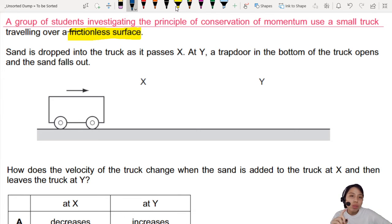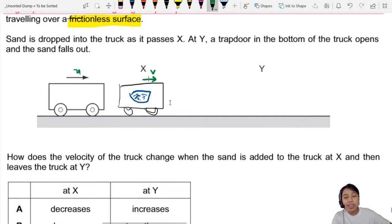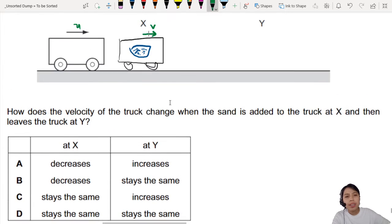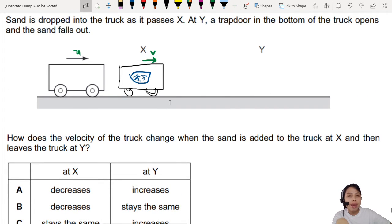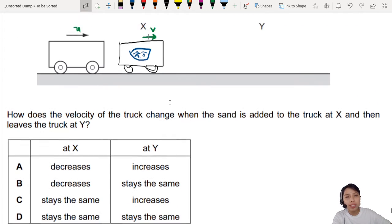Sand is dropped onto the truck as it passes X. So if I draw a truck here, something like this, suddenly its mass is higher because now it will have sand inside that. I don't know how to draw that last sand. And it will be moving at some velocity. I don't know what that is. Maybe this is U, this is V. What happens to the velocity of the truck when sand is added at X and at Y? So at X, when suddenly the mass increases, what happens to the velocity?